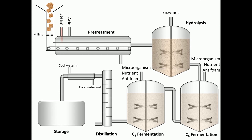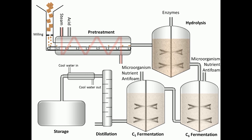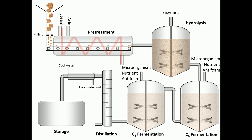The feedstock is delivered to the feed handling area for storage and size reduction in the very first step. Since the efficiency of the fermentation is dependent on the particle size of feedstock, the feedstock is then sent to a pre-treatment reactor.